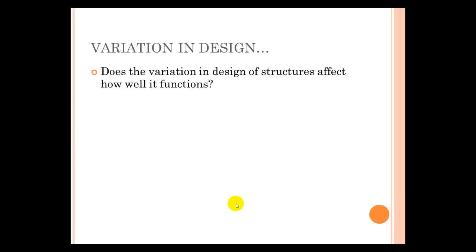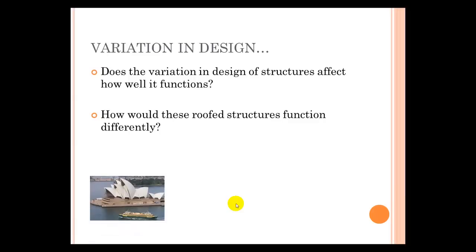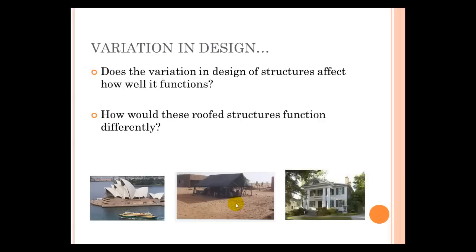The next thing we're going to talk about is called variation in design. How does the variation in the design of the structures affect how well it functions? How would these roof structures function differently? So we have the Sydney Opera House, we have a tent, and we have a house, a regular-looking house.